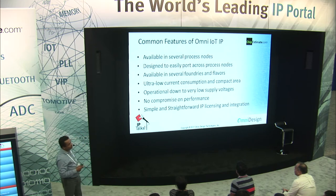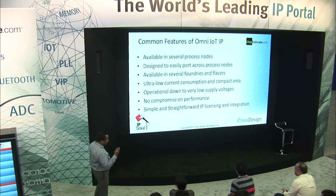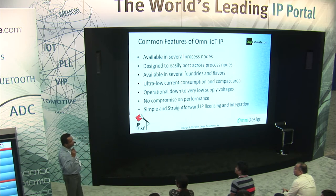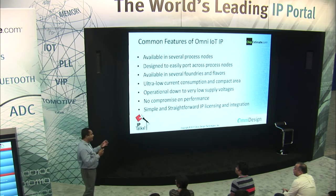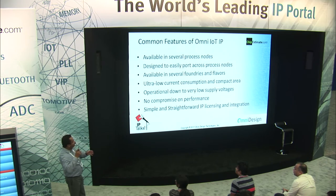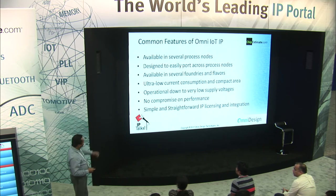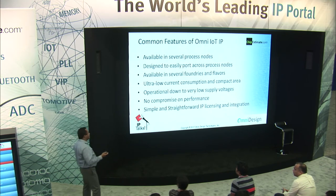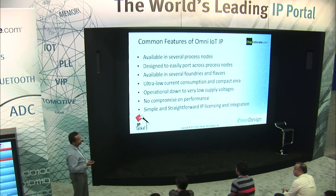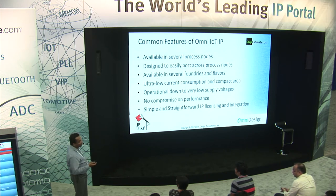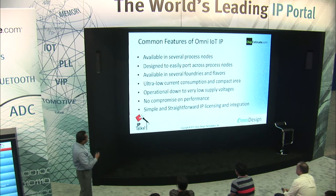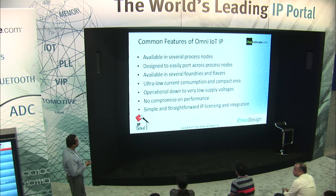Operation down to very low supply voltages is important because as advanced processes scale, they are geared towards digital. If this is a system with a digital core and the supply voltage is going below one volt, your analog better work with that. No compromise on performance — just because you're saving power doesn't mean you give up performance. Our IP licensing and integration path is very straightforward and simple to make it easy for customers.